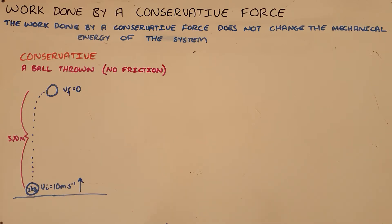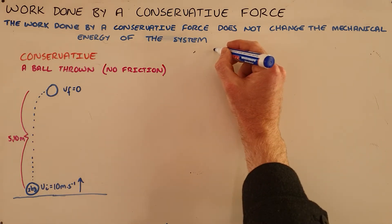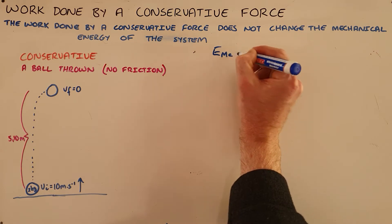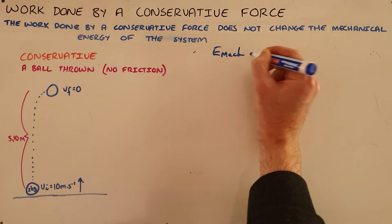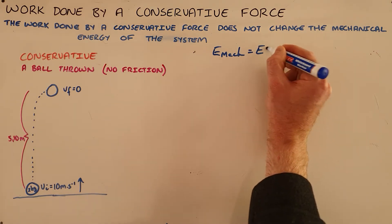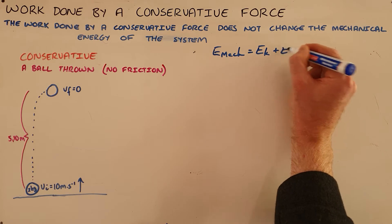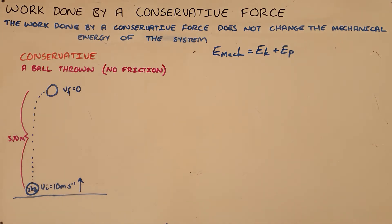The work done by a conservative force does not change the mechanical energy of the system. A conservative force is a force for which the work done is independent of path. The mechanical energy of an object, E_mek, is the sum of an object's kinetic energy and its gravitational potential energy.